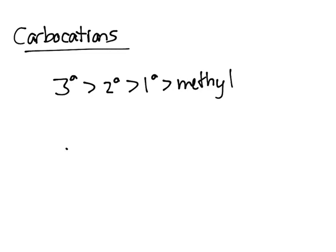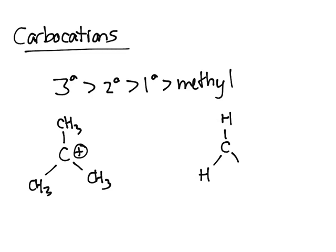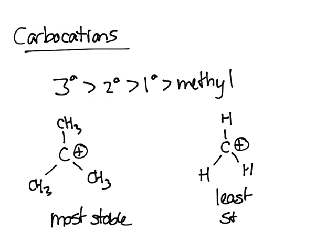Once again, C-CH3-CH3-CH3 with a positive charge would be a tertiary carbocation. Methyl would be C-H-H-H, and that would be least stable. So most stable to least stable.